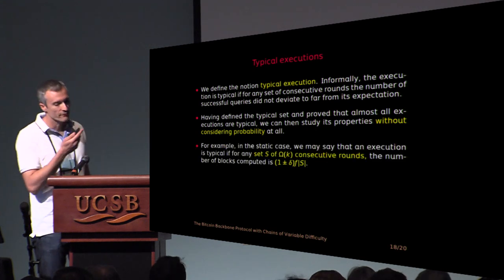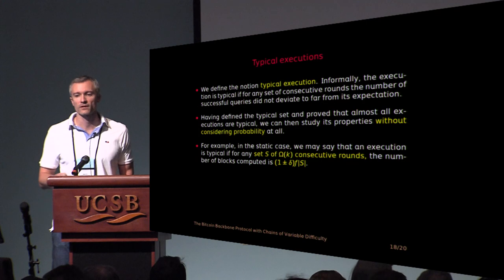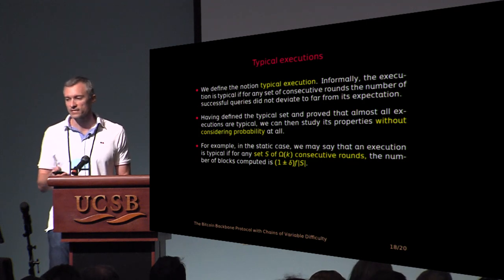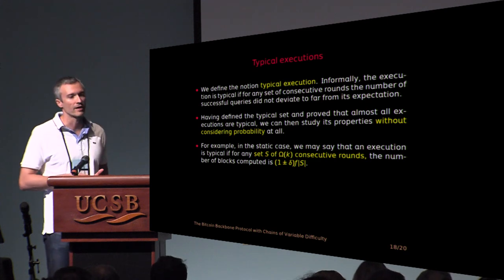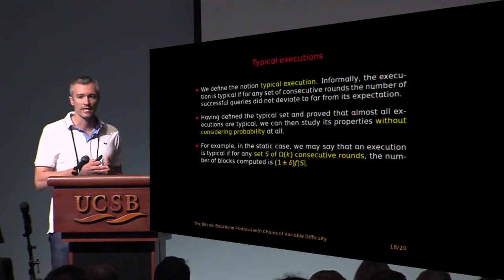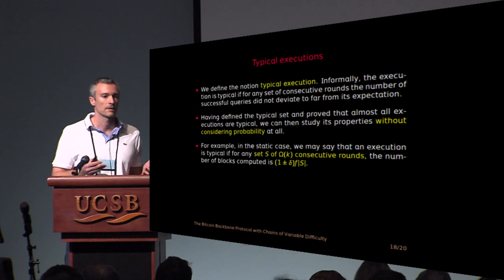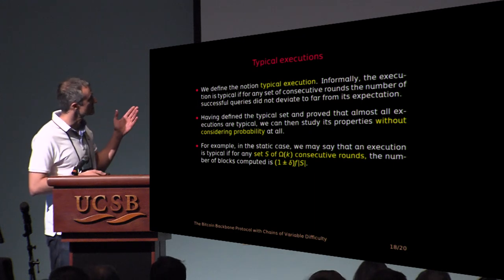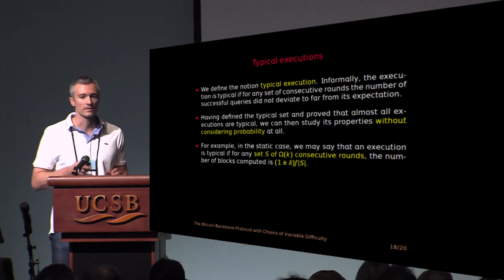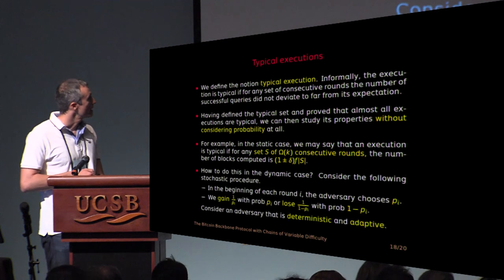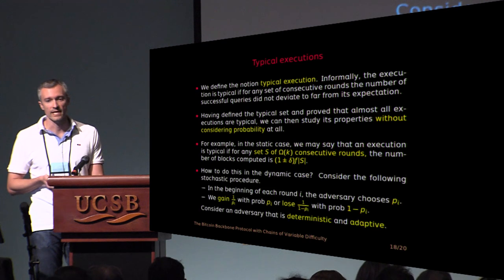So for example, for the static case where you know the probability of a success of the block production rate is constant is f, you can just use the Chernoff bound to say that any sequence that has a number of successes concentrated around the expectation is typical.